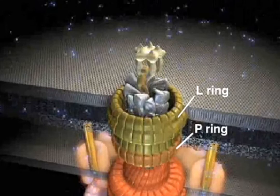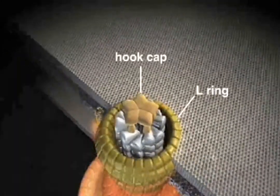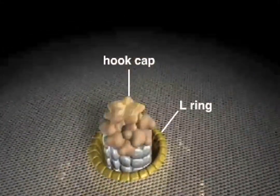As the rod cap is exposed outside the L ring, it dissociates and is replaced by a hook cap that guides the assembly of the hook proteins.